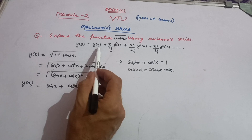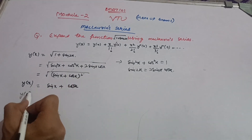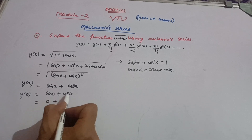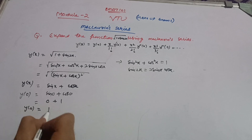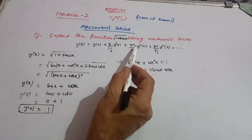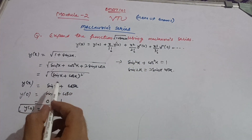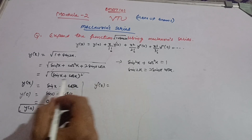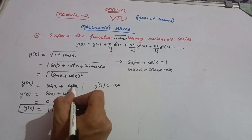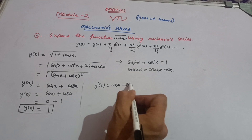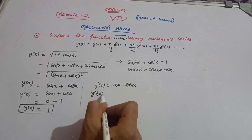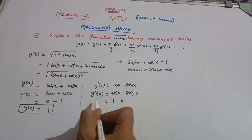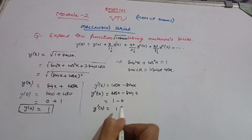Now calculate y(0): put x = 0 into sin x + cos x. You get sin 0 + cos 0 = 0 + 1 = 1, so y(0) = 1. Next, differentiate to get y'(x) = cos x − sin x. Then put x = 0: y'(0) = cos 0 − sin 0 = 1 − 0 = 1. So y'(0) = 1.